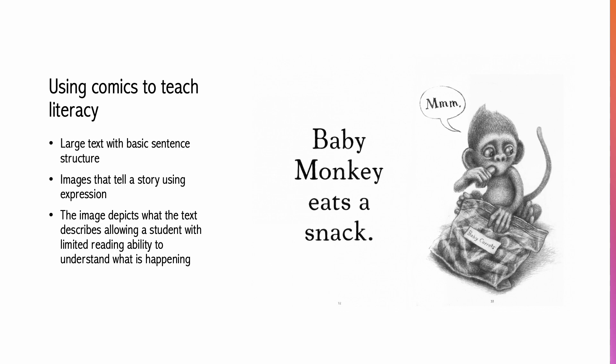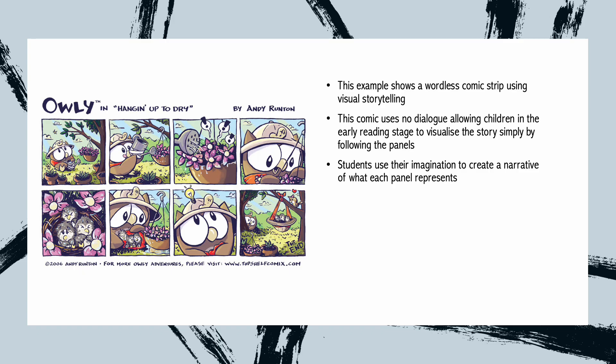Some examples of comic-style literature for children with limited literacy skills include Baby Monkey Private Eye by Selznick B. and Serlin D. 2018, and the book series Hourly by Andy Runtan 2007. These examples use minimal text and narrative through visual storytelling. This is a good introduction for children with reading difficulties such as dyslexia or those in the early stages of their reading journey. The use of humour and clear sequential pictures allows the learner to be engaged and construct meaning through these images. Here we see an example of one of the Hourly series — a wordless comic strip using visual storytelling. The comic has no dialogue, which allows children at any stage of their reading to visualise the story simply by following each panel. Students can use their imagination to create a narrative of what each panel represents without having to read any text.